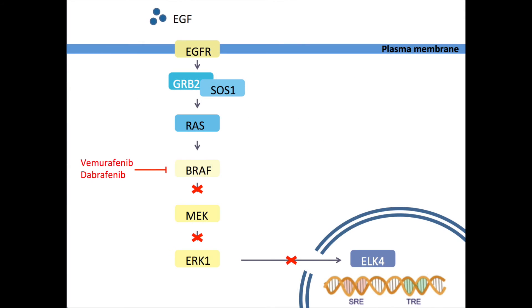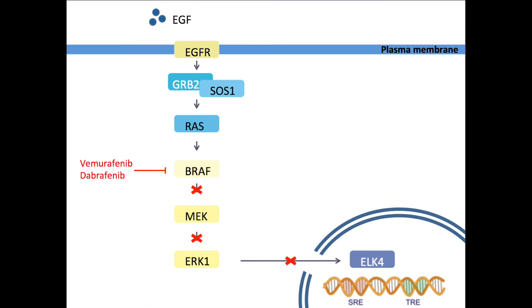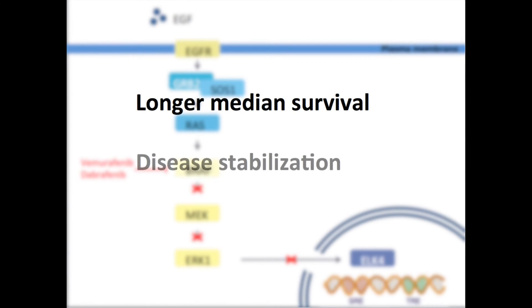These kinds of targeted therapies have improved survival rates significantly. For example, vemurafenib has shown to give complete or partial remission in 81% of V600E-mutated melanoma patients. Use of vemurafenib gives a longer median survival, disease stabilization, and in some cases even dramatic regression. Dabrafenib showed similar results.